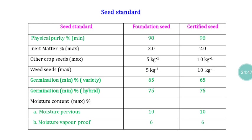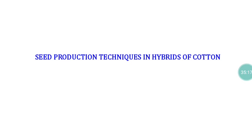As far as cotton seed standards are concerned, physical purity of 98 percent is to be maintained. The germination standard for varieties is 65 percent — lots with 65 percent germination can be sold in the open market. For hybrids, 75 percent germination must be ensured. These are the important aspects with reference to cotton varietal seed production. In the next segment, we can discuss hybrid seed production in cotton.